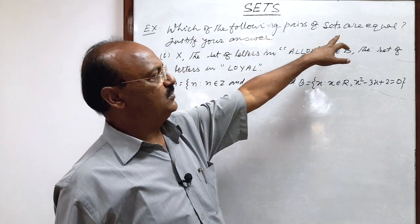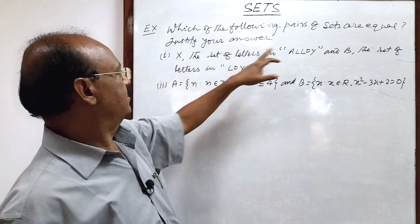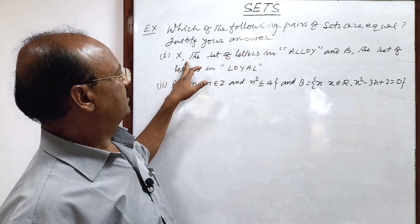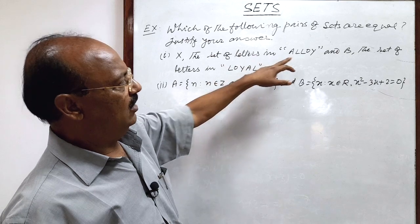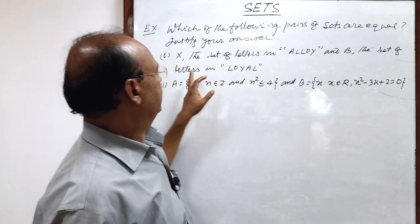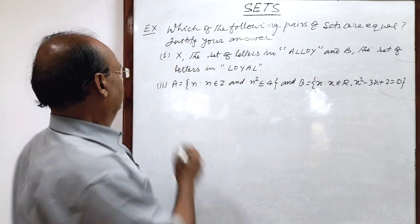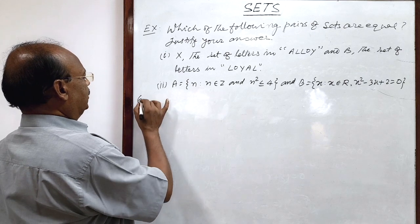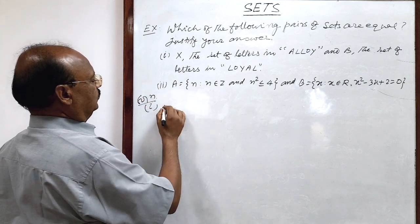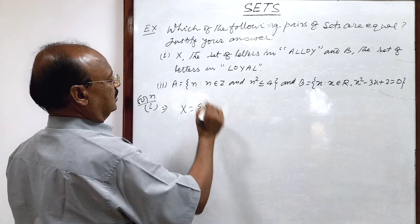So let us see the question here. Which of the following pairs of sets are equal? Justify your answer. First question: X, the set of letters in ALLOY, and B, the set of letters in LOYAL. So let us see the solution of the first question here.